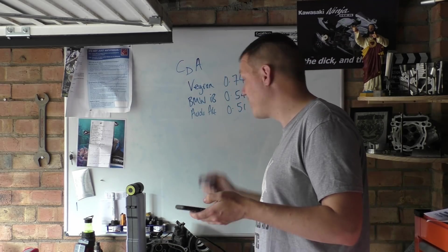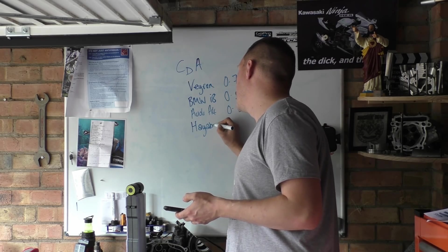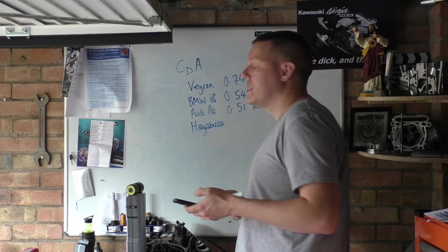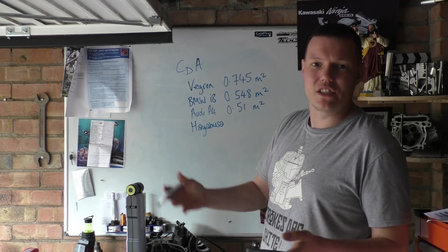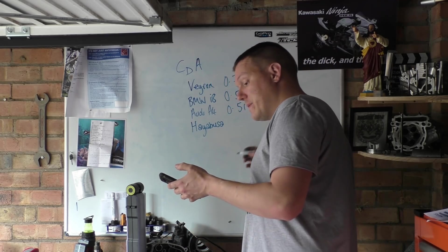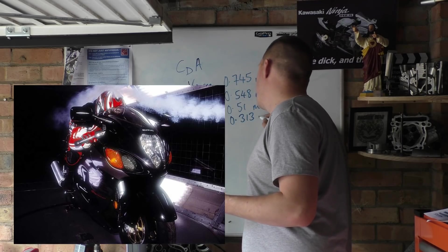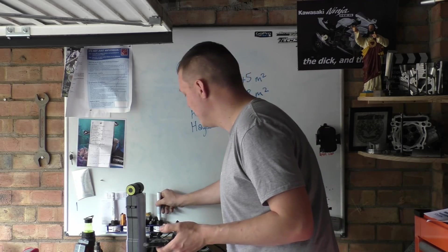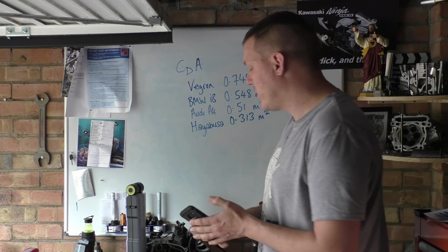This number is spat out for a Hayabusa, which is a streamlined bike but not twice as streamlined as an R1 or GSXR: it comes out at 0.313. As you can see, it is a lot lower than all the rest—half that of a Veyron.